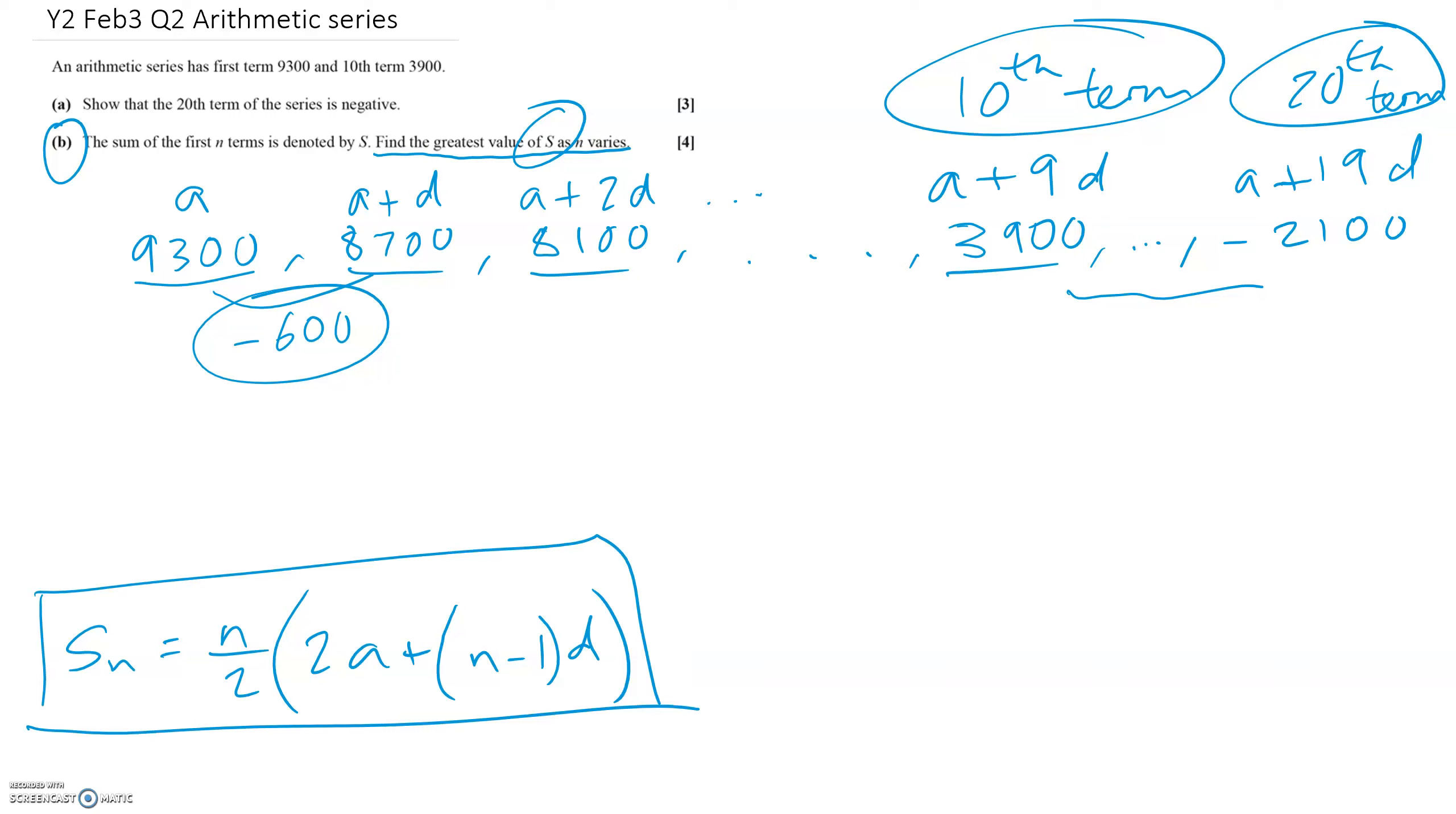So let's find out when these terms first turn negative. We want to find, this is the general formula for the nth term of an arithmetic sequence. When does this become less than zero? Well, we know our first term is 9,300. We want to find the value of n when we get less than zero. d is minus 600.